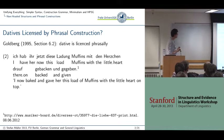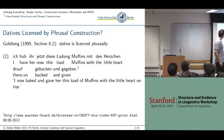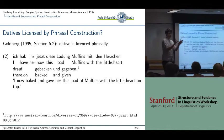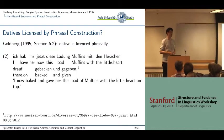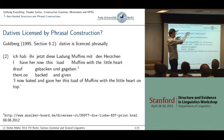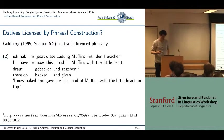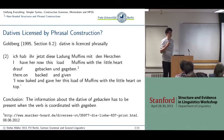In German: 'Ich habe ihr jetzt diese Ladung Muffins mit den Herzchen draufgebacken und gegeben.' Here you have a coordination of two verbs — gebacken und gegeben — and you have the subject, the dative here, the object, and the verbs. This is the lexical coordination, and the arguments are shared by both verbs. That's something I don't know how to explain if you believe that this argument is introduced by a phrasal configuration — it cannot be accounted for in a Goldbergian analysis.